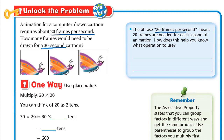The phrase '20 frames per second' means 20 frames are needed for each second of animation. This helps us know what operation to use. Each second needs 20 frames — the first second needs 20, the second second needs 20, the third second needs 20, and so on until the 30th second.